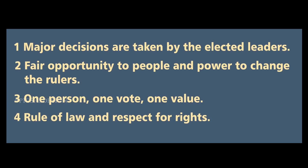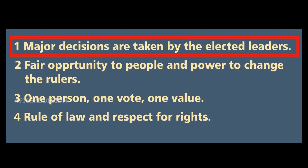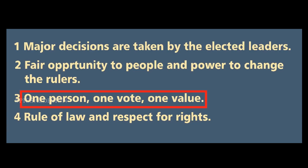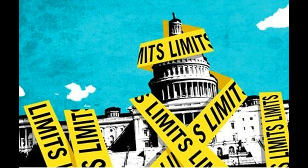Hence, we can sum up the features of democracy: it is a form of government in which rulers elected by the people take all the major decisions; elections offer a choice and fair opportunity to the people to change the current rulers; this choice and opportunity is available to all the people on an equal basis; and the exercise of this choice leads to a government limited by basic rules of the constitution and citizens' rights.